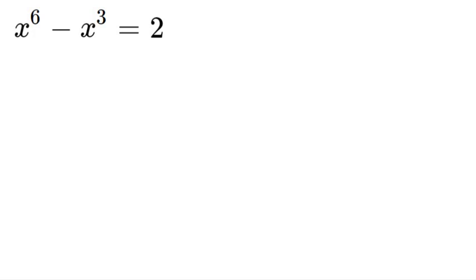So the first thing we're going to do is subtract 2. So we'll have x to the power of 6 minus x cubed minus 2 is equal to 0.